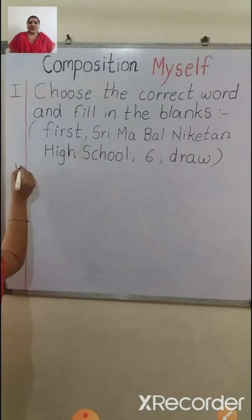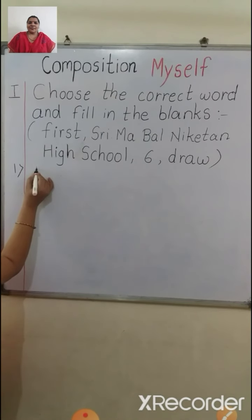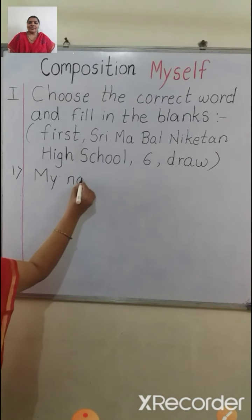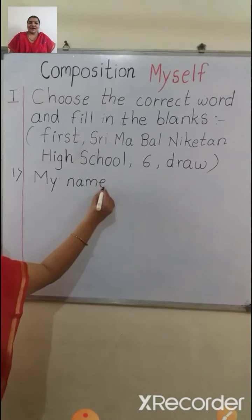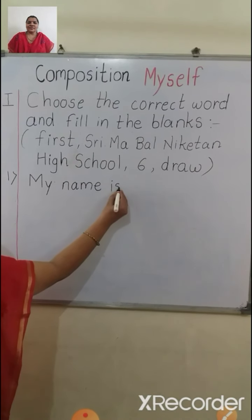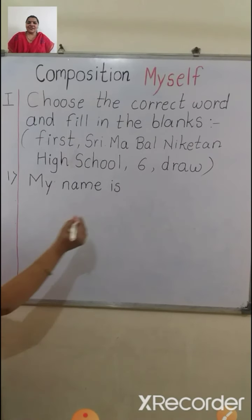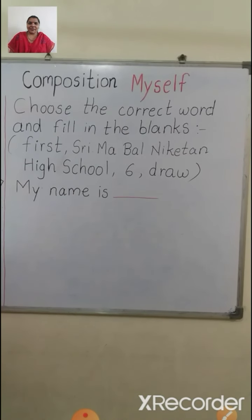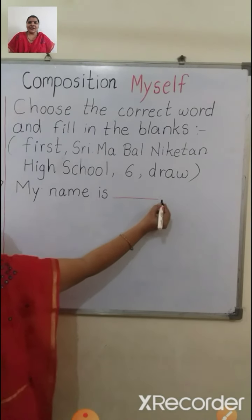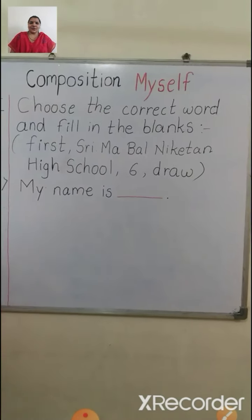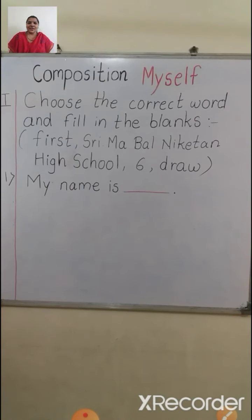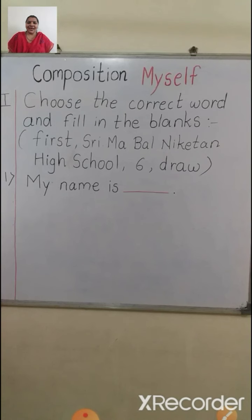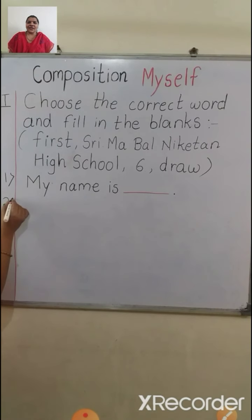Now write number 1: 'My name is ___.' Here in this blank, you are going to write your own name. When we are writing a composition on 'Myself,' you have to introduce first of all your name. So write your own name in the blank. Have you finished children? Now write number 2.